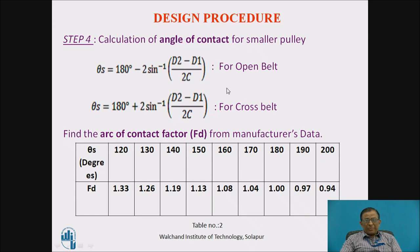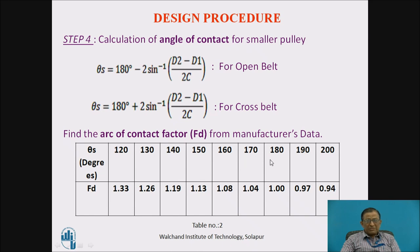The angle of contact between the smaller pulley and the belt is important for power transmission. For an open belt, this angle θ_S = 180° − 2·sin⁻¹((D2 − D1)/2C), and for a crossed belt it is 180° + 2·sin⁻¹((D2 − D1)/2C). This angle is used to select the arc of contact factor FD from manufacturer's data, since the manufacturer rates belt power at 180° contact. For example, if θ_S is around 140°, the factor FD becomes 1.19 from the table.